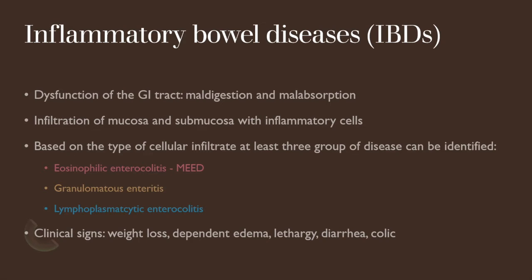Clinical signs are quite nonspecific: weight loss, dependent edema due to low proteins, lethargy, diarrhea, and colic. Colic in horses with IBD is usually a mild spasmodic colic caused by abnormal fermentation in the large intestine due to decreased absorption of nutrients, in particular carbohydrates, in the small intestine.